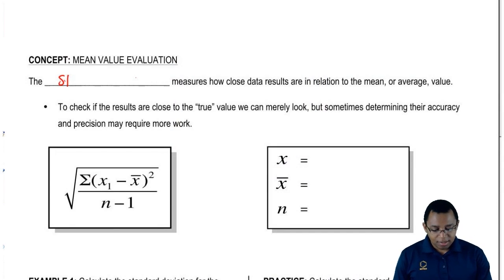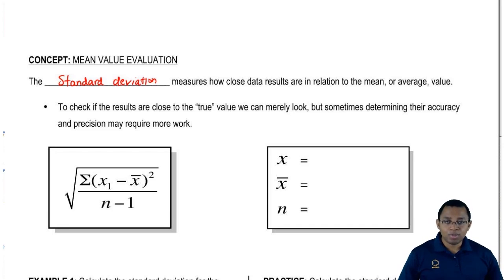The standard deviation measures how close data results are to the mean or average value. Sometimes it's easy for us to look when we have a few numbers. We just simply look to see how close they are to one another, how close they are to the true value.